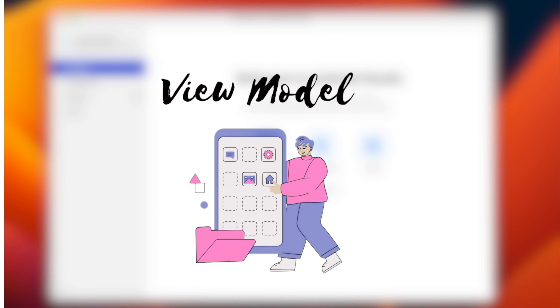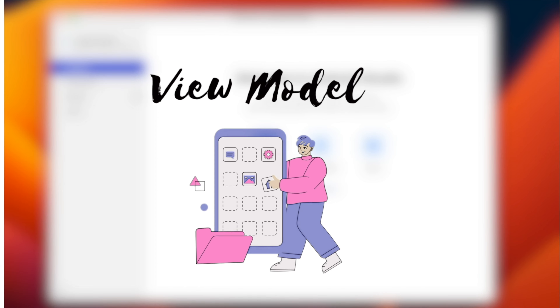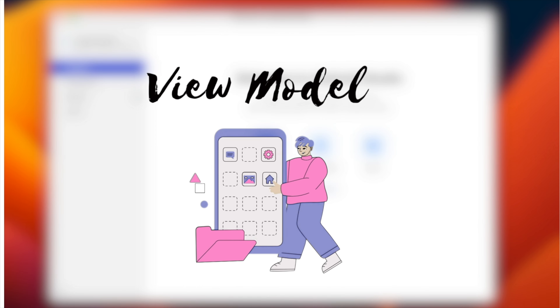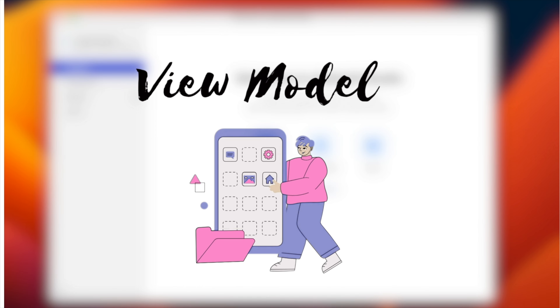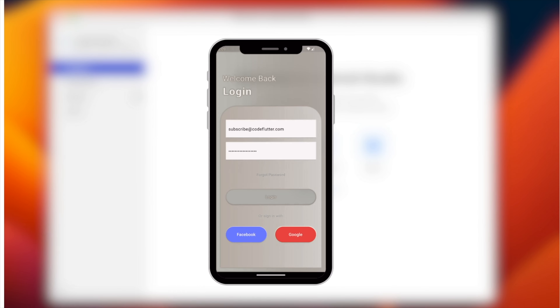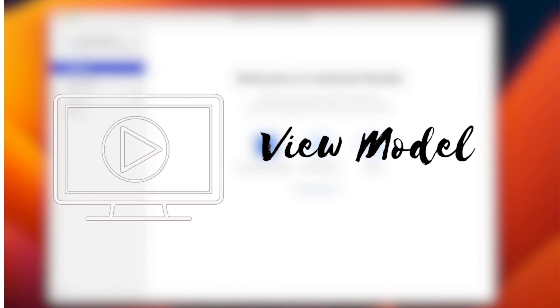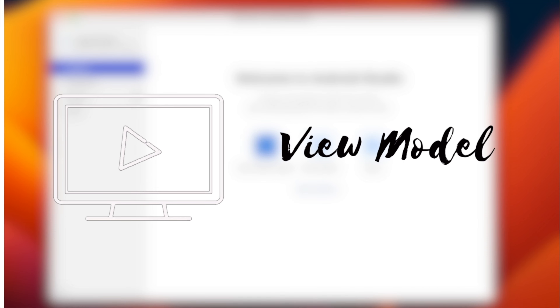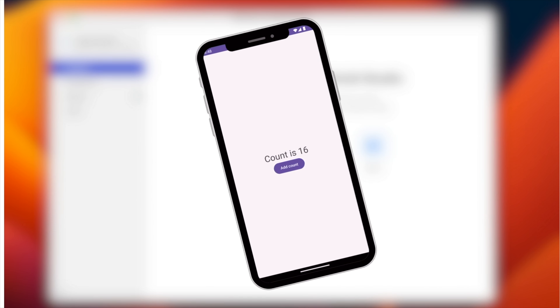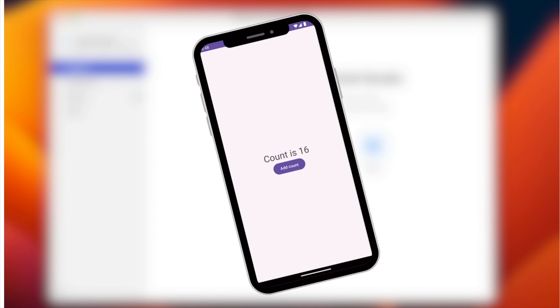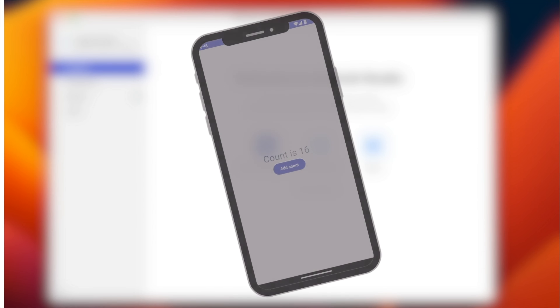ViewModel helps us to maintain and manage our app data in a way that survives configuration changes like screen rotation, and keeps the app's UI separate from the data. In this video we will be working with a simple example — we will have a counter in our application and we will use the ViewModel to handle its data.